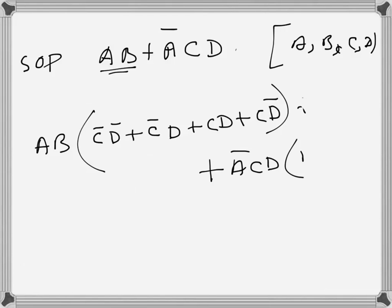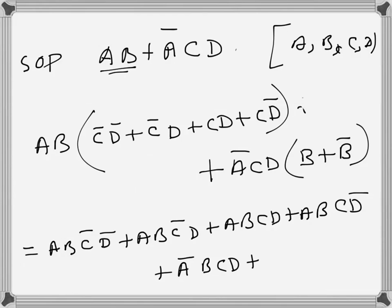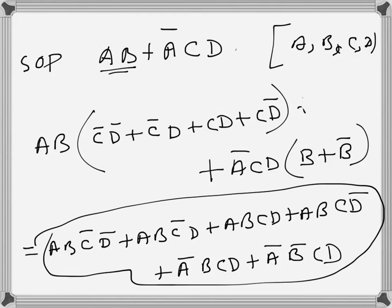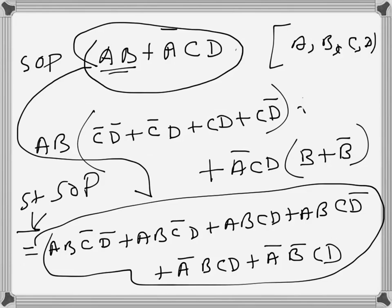And the term a-bar·c·d needs b incorporated, giving a-bar·b·c·d + a-bar·b-bar·c·d. So the full standard sum of products becomes: a·b·c-bar·d-bar + a·b·c-bar·d + a·b·c·d + a·b·c·d-bar + a-bar·b·c·d + a-bar·b-bar·c·d. This is the standard SOP for the given expression. Next I'll probably do standard POS (product of sums) as well.